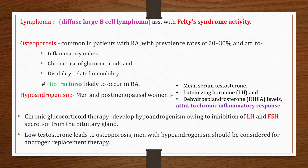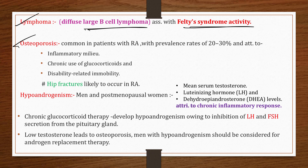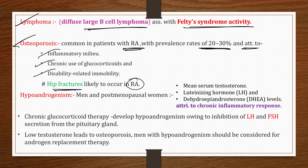RA patients are at risk of developing diffuse large B-cell lymphoma, which is associated with Felty's syndrome activity — the higher the Felty's syndrome activity, the greater the risk. Osteoporosis is also common in RA, with a prevalence of 20–30%, attributed to the inflammatory milieu involving diverse cytokines and chemokines, chronic glucocorticoid use, and disability-related immobility. Hip fractures are likely to occur in RA patients.